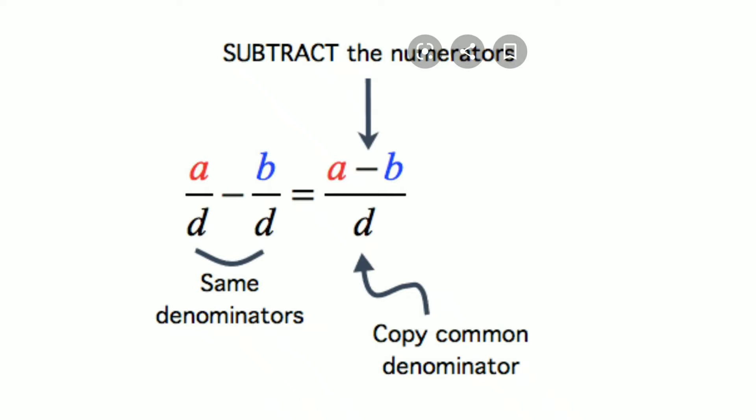Here is the formula: A upon D minus B upon D. Step 1: Subtract the numerator.